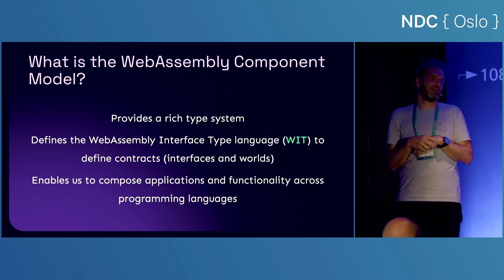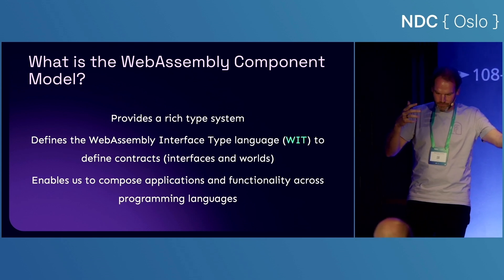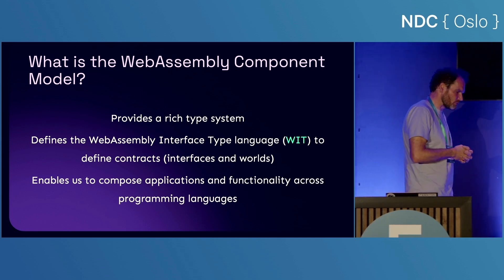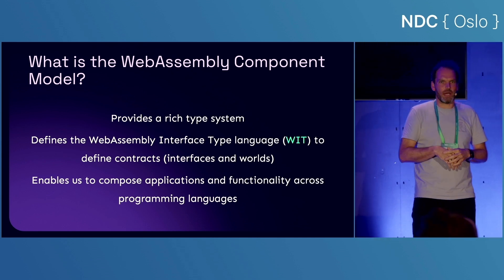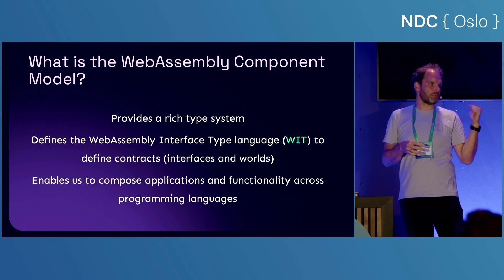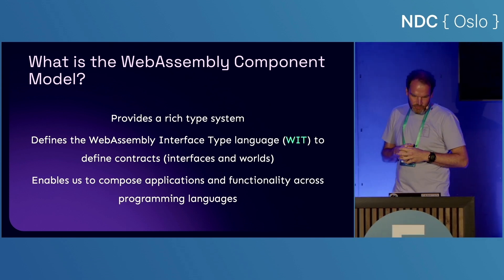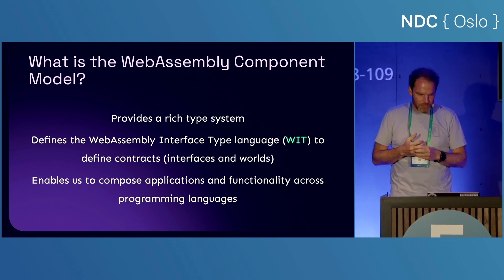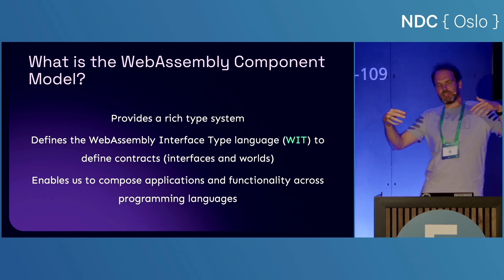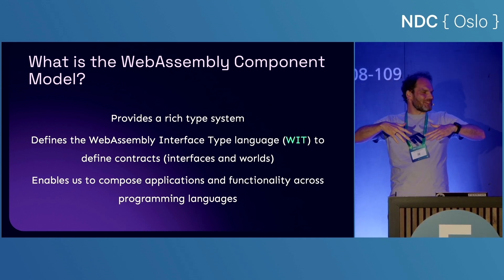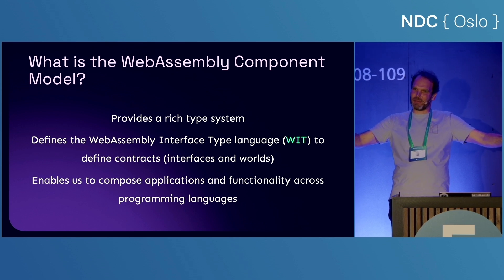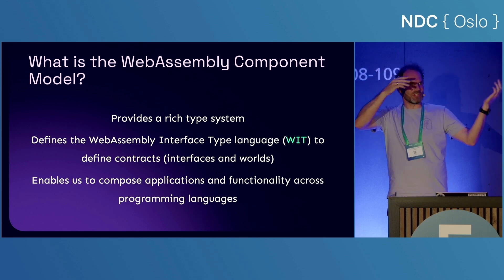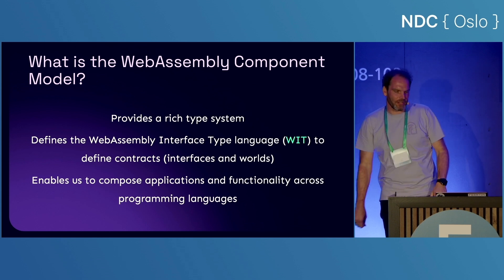With the WIT language we're able to describe interfaces that we can implement or offer across programming languages. For example, in C# I could implement a function to take a string and make it uppercase, and then write a program in Rust that calls that C# function. The way those interfaces are defined is through WIT. So we can start composing applications and functionality across various programming languages — that's what the WebAssembly component model gives us. You can think about the component model taking the portability of the compilation target and moving it back up to the programming language level, so we can import libraries written in other languages.